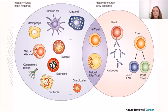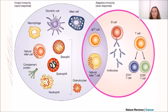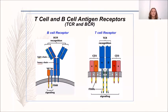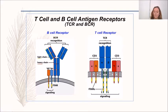The adaptive response is a slower response but more specific. It is composed of B cells, responsible for humoral immune response, and T cells, responsible for cellular immune response. Both B and T cells have specific antigen receptors, which are membrane receptors with a recognition part of the molecule, a transmembrane part, and a signal transduction fragment.